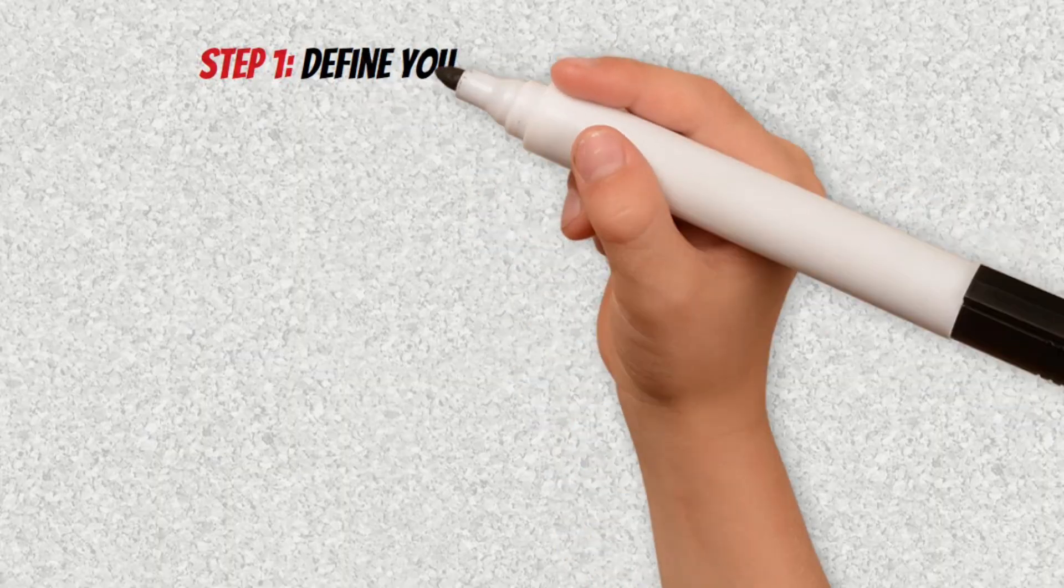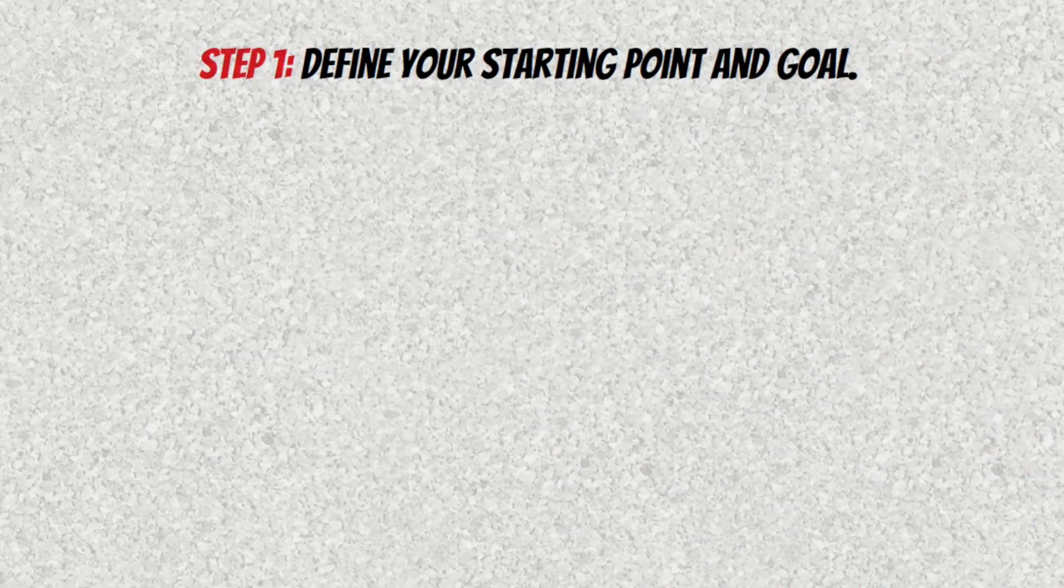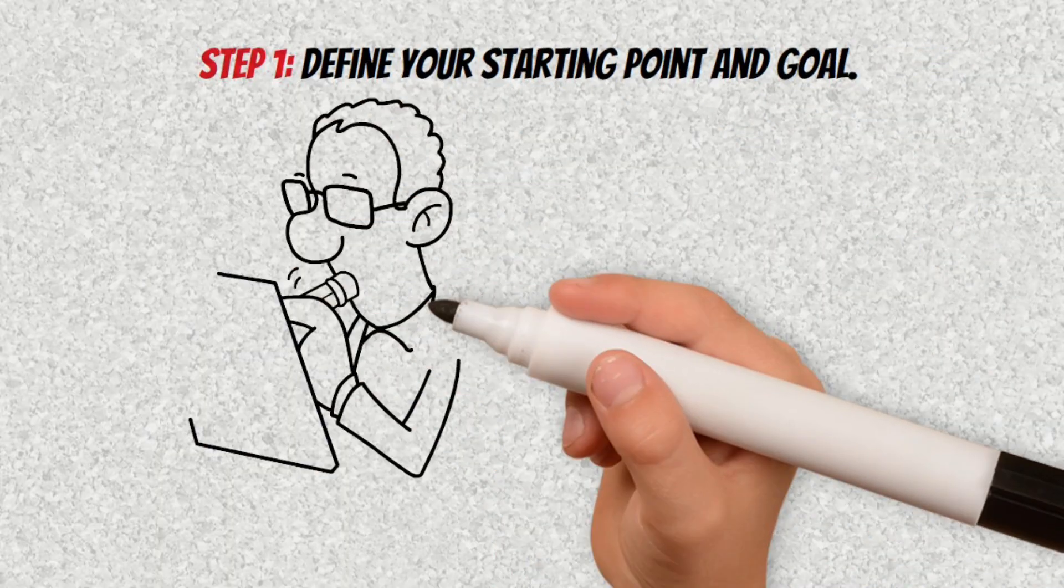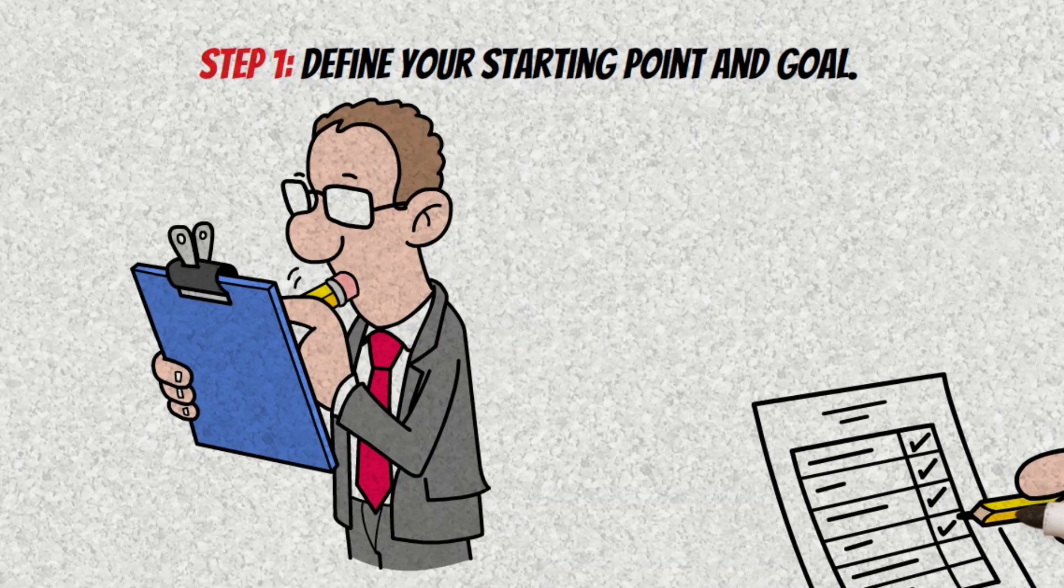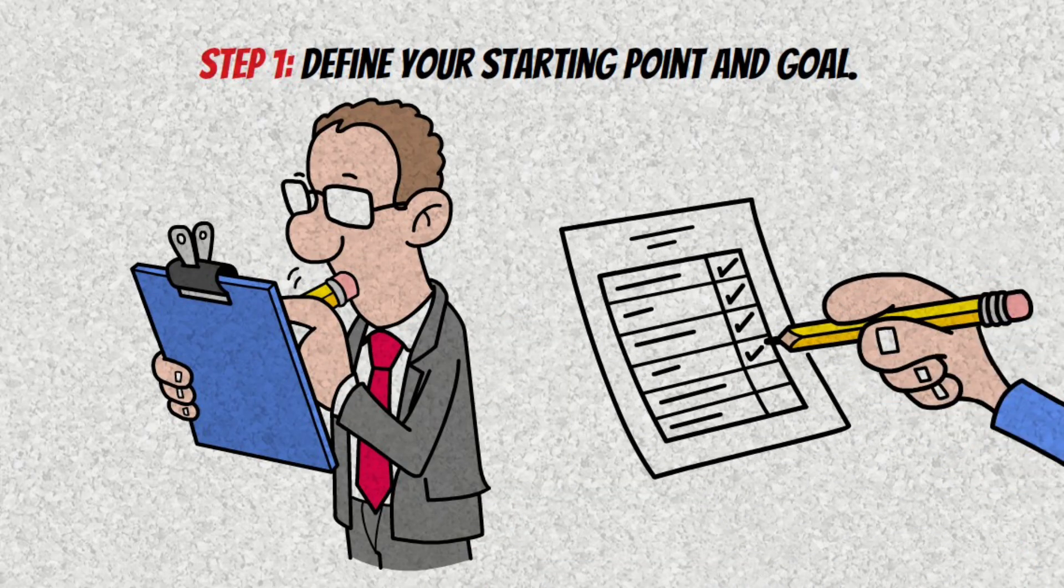Step 1: Define your starting point and goal. Write down exactly how much you have to invest and the amount you want to reach. Be specific and set deadlines according to the rule cycles: 8 years, 4 years, or 3 years.